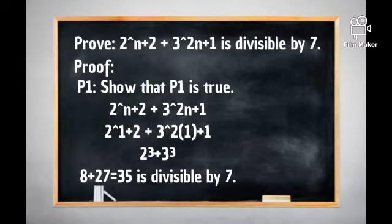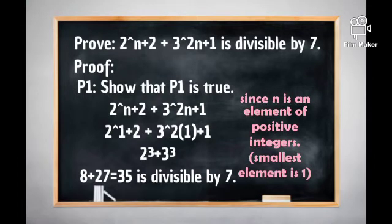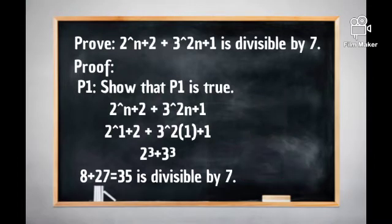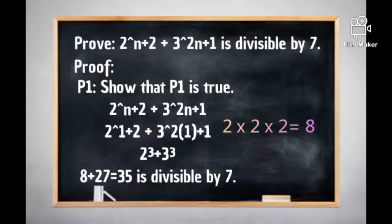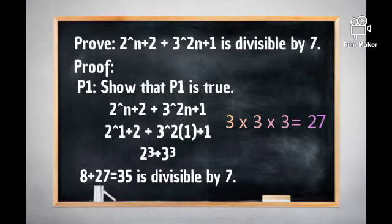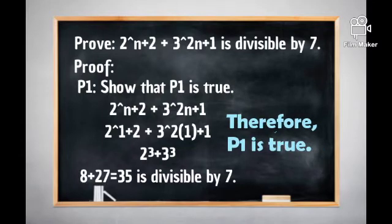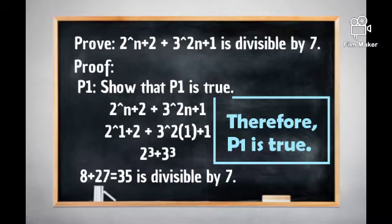The first step is to show that P(1) is true. Since the smallest element of the natural numbers is 1, we substitute n=1. So n+2 becomes 1+2=3, giving us 2 cubed. And 2(1)+1=3, giving us 3 cubed. Now 2 cubed is 8, and 3 cubed is 27. So 8 plus 27 equals 35, and 35 is divisible by 7. Therefore, P(1) is true.